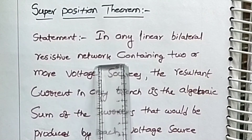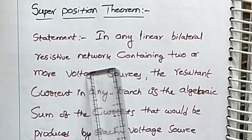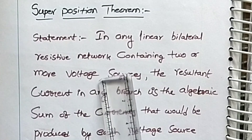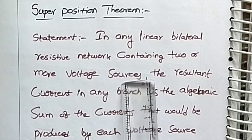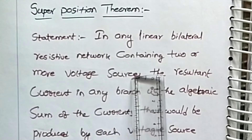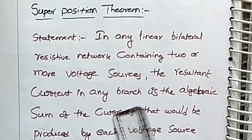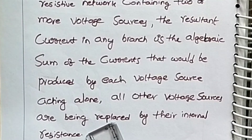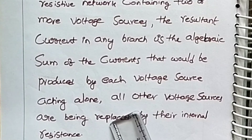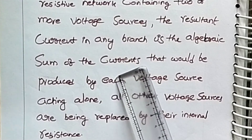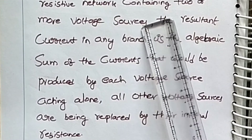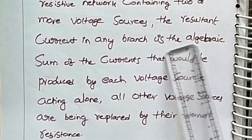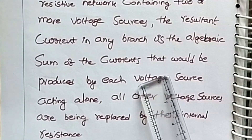Superposition theorem statement: in any linear bilateral network containing two or more voltage sources, the resultant current in any branch is the algebraic sum of currents that would be produced by each voltage source acting alone, with all other voltage sources being replaced by their internal resistances — that is, voltage sources short-circuited and current sources open-circuited. The algebraic sum of currents equals the total current passing through one branch.